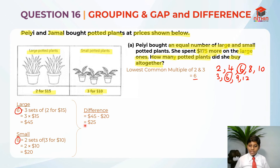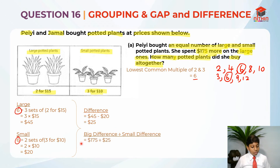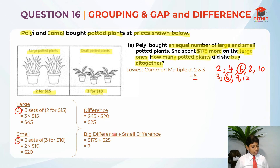Is $175 and $25 the same? No, so this is where the concept of gap and difference comes in. The big difference is $175 — that is what it's supposed to be — but our calculated difference is only $25. So we divide: $175 ÷ $25 = 7. This gives us the number of groups, or sets. So there are 7 sets.